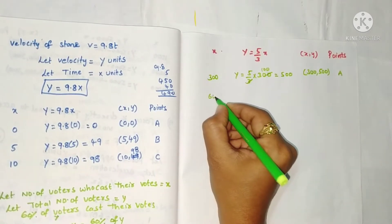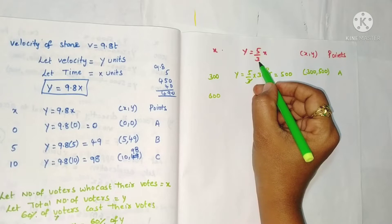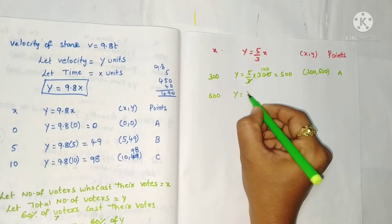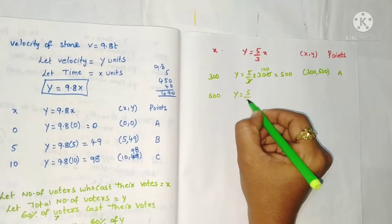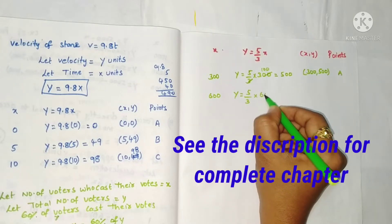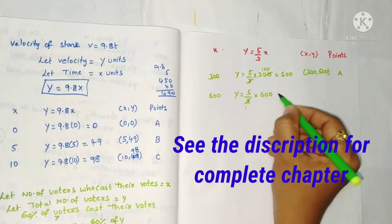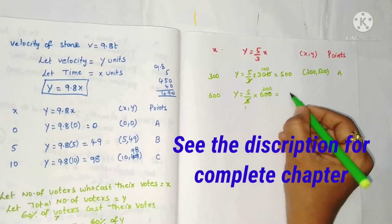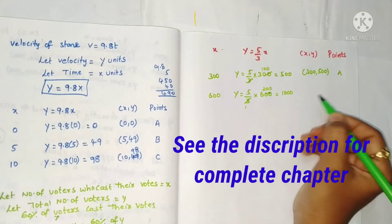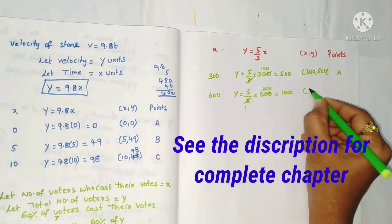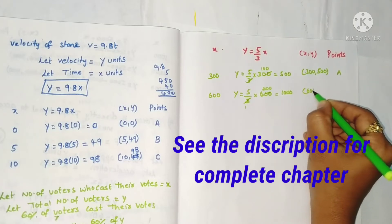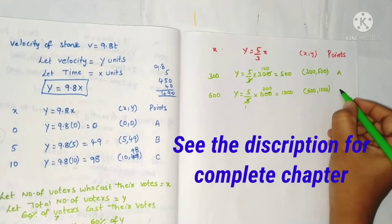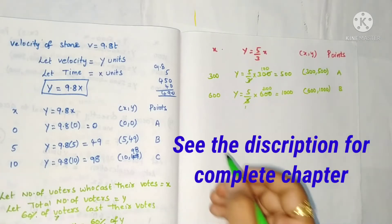Next, take x as 600. y equals 5/3 × 600 = 1000. So the second point is (600, 1000), which is point B.